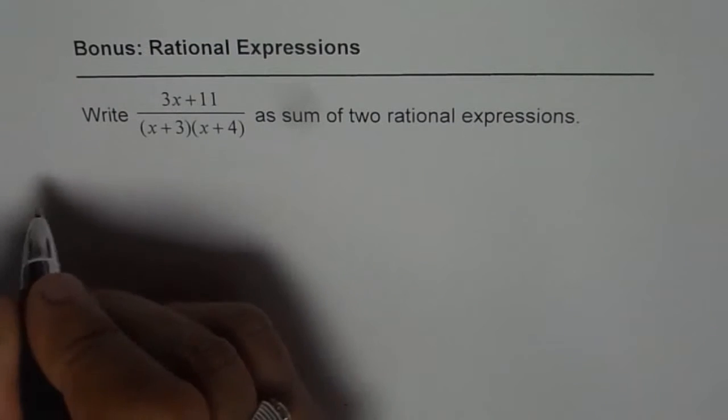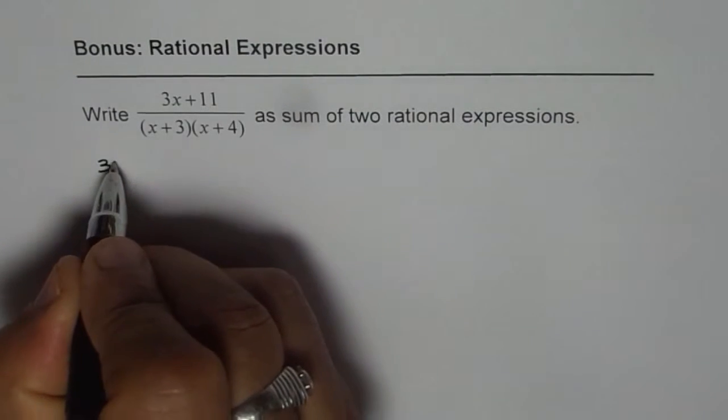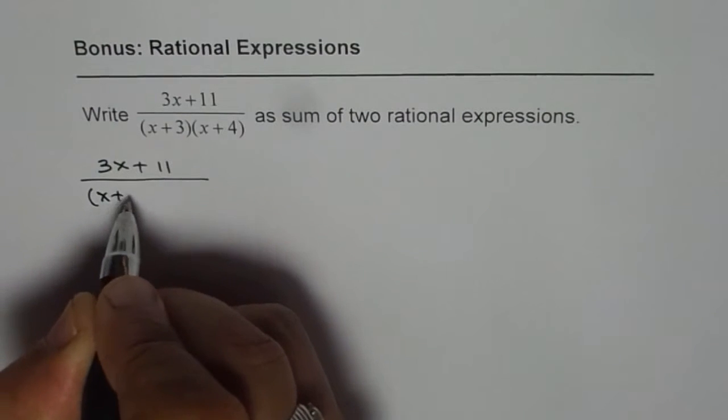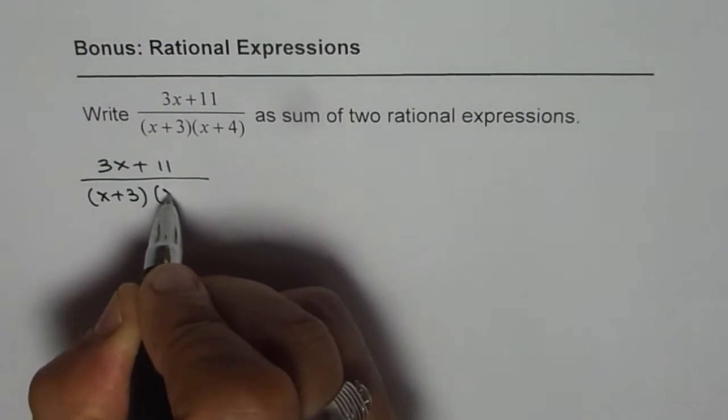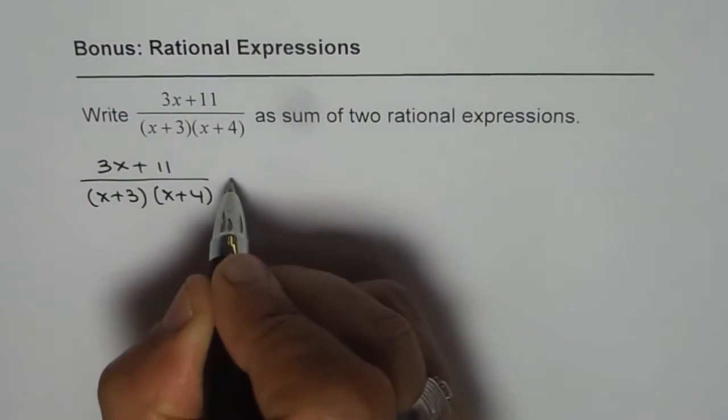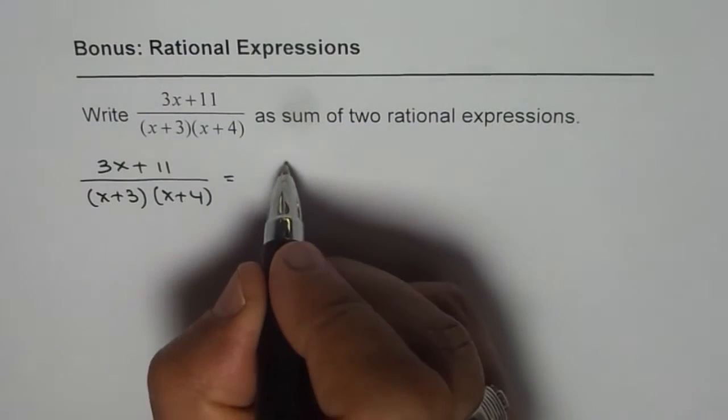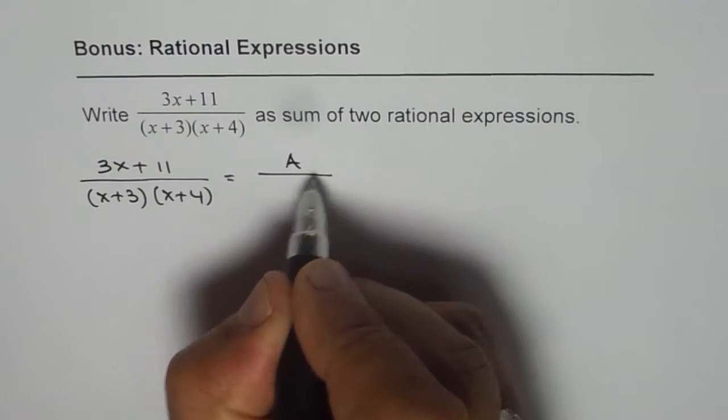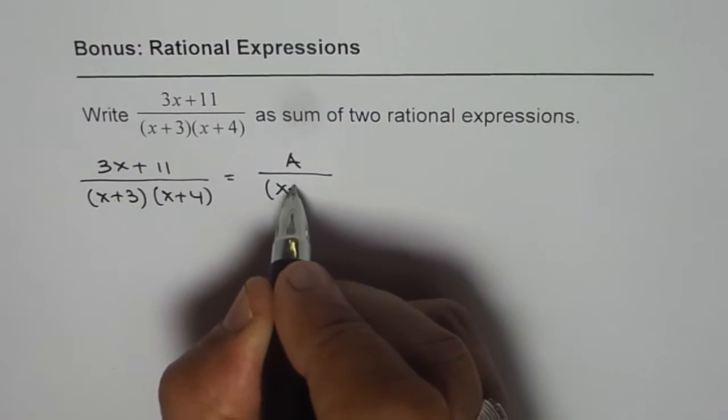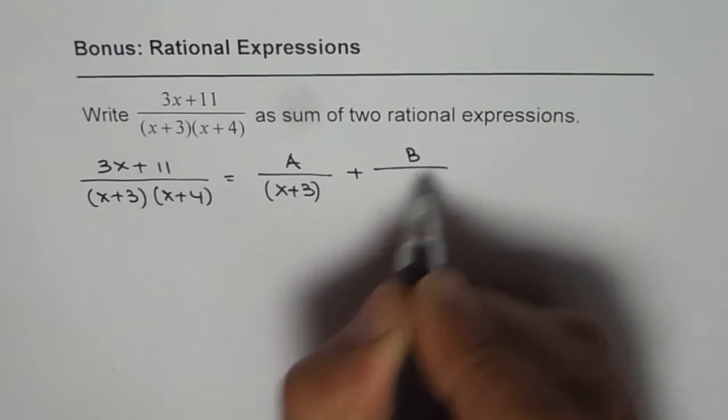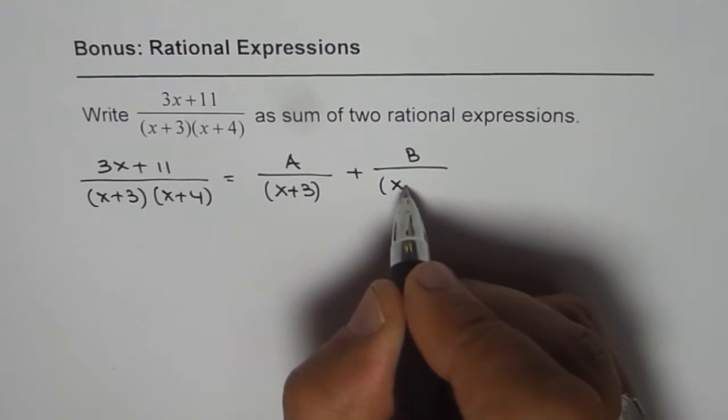It really means that you have to write 3x plus 11 over (x plus 3)(x plus 4) as equal to sum of 2 rational expressions. That means A over something which could be one of these factors plus B over the other factor which is x plus 4.